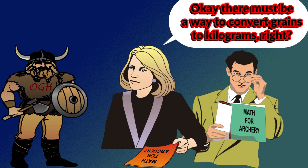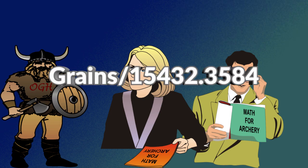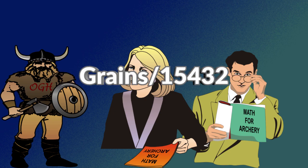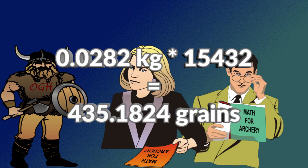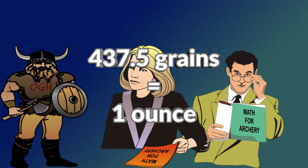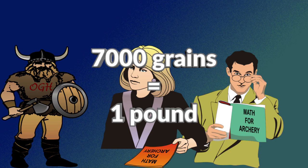There must be a way to convert grains to kilograms, right? Divide grains by 15,432.3584 — that can be rounded to 15,432 and be very close. 435 grains equals 0.0282 kilograms. To change kilograms to grains, multiply the kilograms by that same 15,432. On a side note, there are 437.5 grains in one ounce and 7,000 grains in one pound.